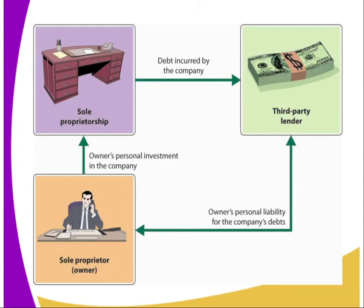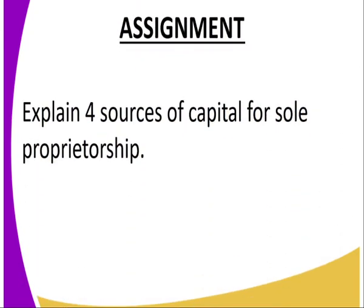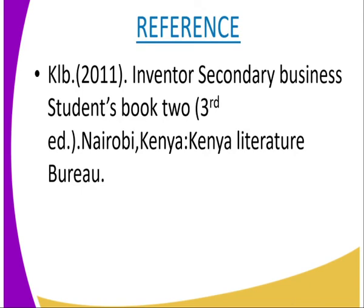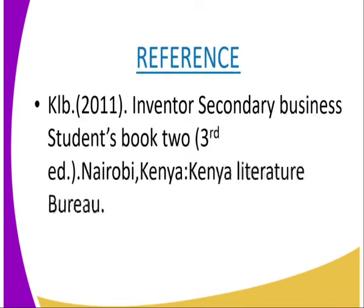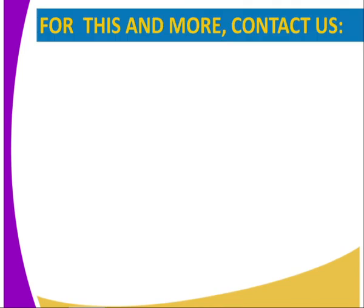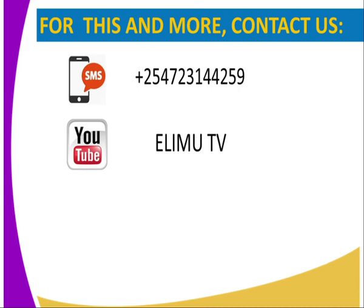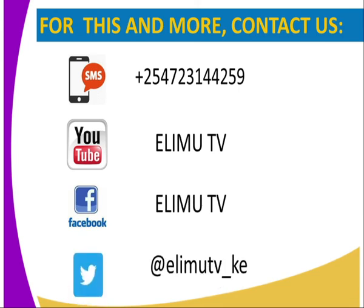The activity for today: explain four sources of capital for sole proprietorship. For reference, you can use the KELB 2011 Inventor Secondary Business Student Book 2 edition. If you require any further information, you can send an SMS, visit YouTube, find us on Facebook, or Twitter us. Stay tuned. Thank you.